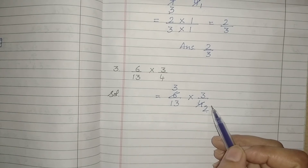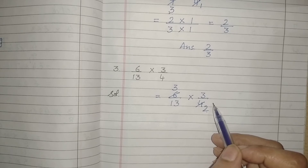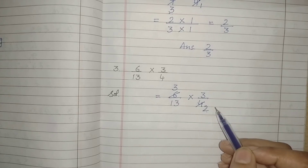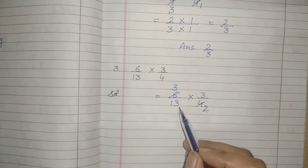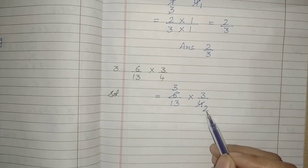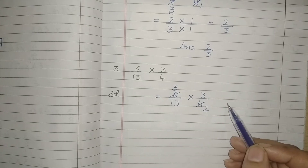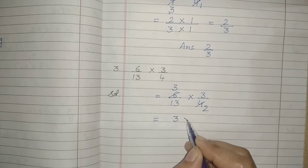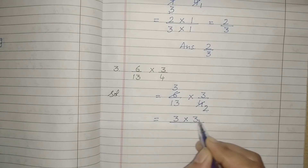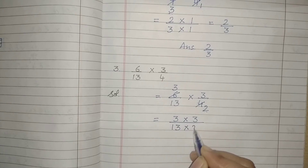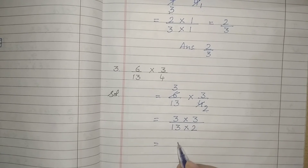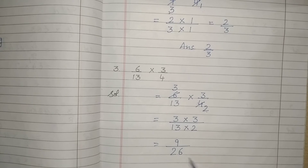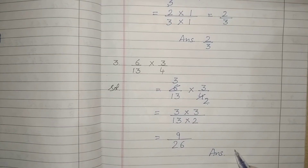We have to choose a common factor — a common number that divides both numerator and denominator. Now let's check further cancellation: 3 and 13 can't cancel, 3 and 2 can't cancel, 3 and 13 can't cancel. So further cancellation is not possible. Next step: multiply numerators — 3 threes are 9 — and denominators — 13 twos are 26. So the answer is 9 upon 26.